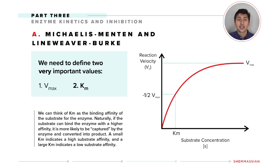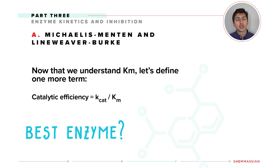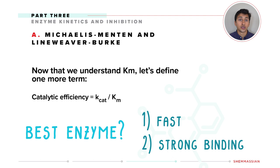Let's conduct a thought experiment. If we wanted to design the best enzyme possible, we'd first want it to work very quickly — hence the speed, denoted by Kcat, should be high. We'd also want the enzyme to bind substrate even if very little substrate was available, so Km should be low. The catalytic efficiency formula confirms this: the speed of a single enzyme is directly proportional to catalytic efficiency, while the affinity is inversely proportional.